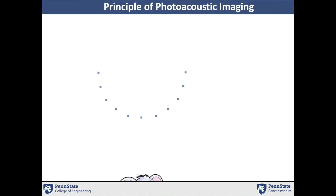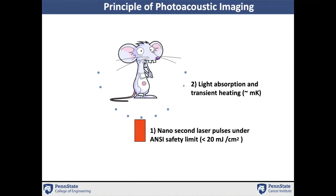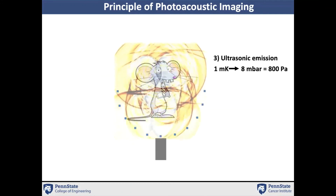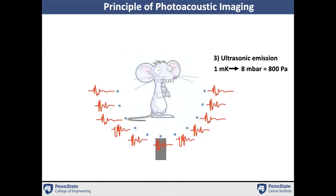For those new to photoacoustic imaging, here is the working principle. Most commonly, a short-pulse laser light irradiates the subject of interest. Biological tissue scatters these light photons, and when diffused photon waves strike light-absorbing molecules such as hemoglobin in the blood vasculature, these molecules undergo transient thermoelastic expansion, which subsequently leads to broadband photoacoustic waves. These waves propagate outside the body, get detected by transducer elements, and we can form photoacoustic images using beamforming algorithms.